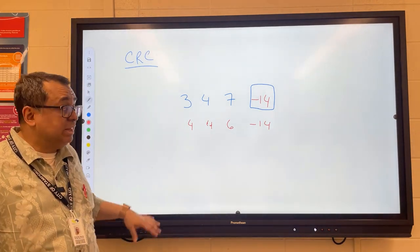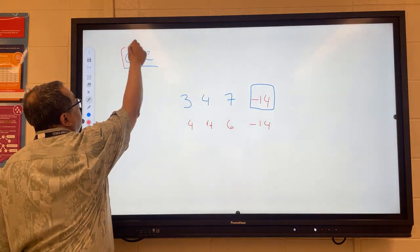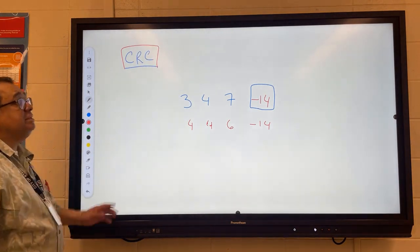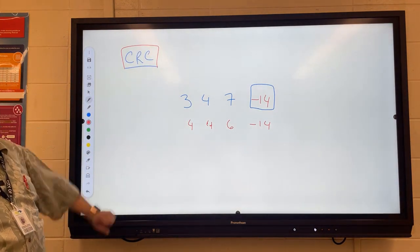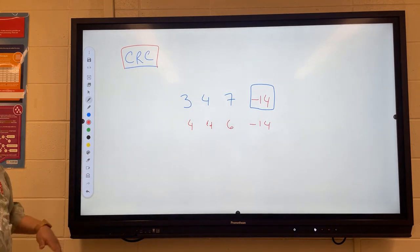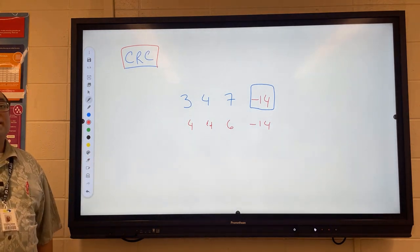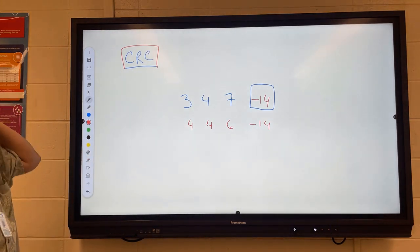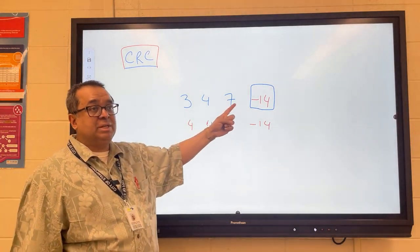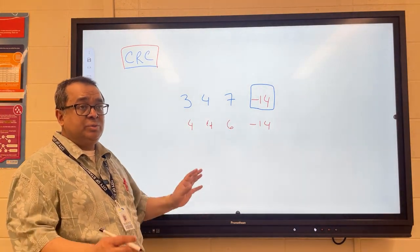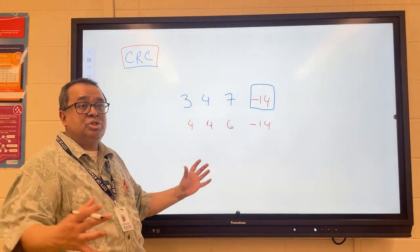So what they've come up with is this other slightly more sophisticated technique called a CRC. This technique is very similar, except that instead of adding all the numbers together, what we do is just mush them together into a giant number.